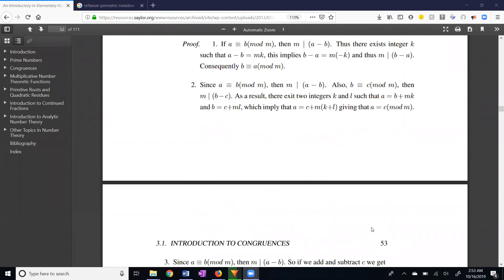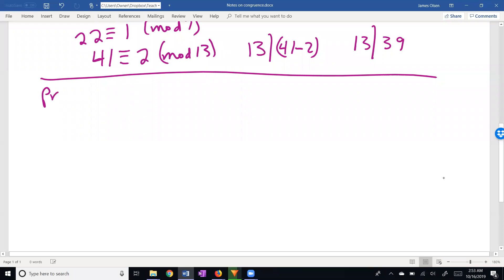So all of these proofs are quite straightforward. Now let's prove that congruence is reflexive, that A is congruent to itself mod M. It's kind of trivial, but we're taking baby steps here on day one, so let's give it a try.